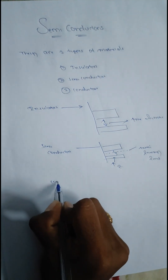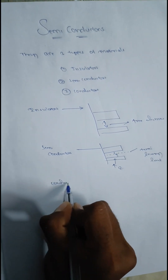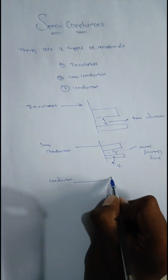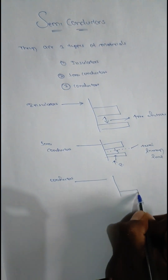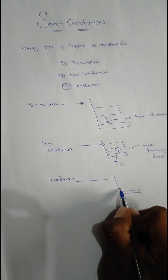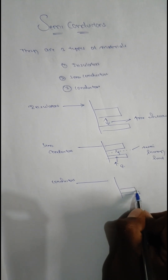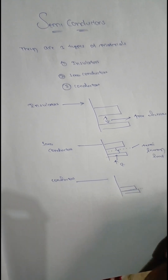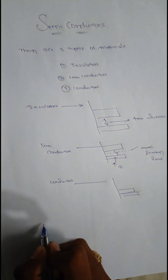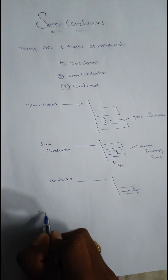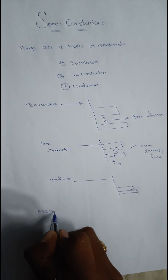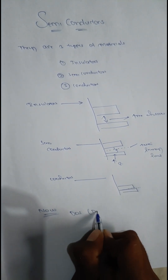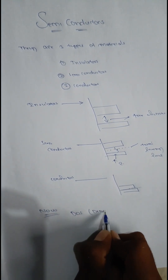This energy level is known as the Fermi energy level. In conductors, the valence band and conduction band overlap each other. Now we are going to discuss about DOS — density of states.